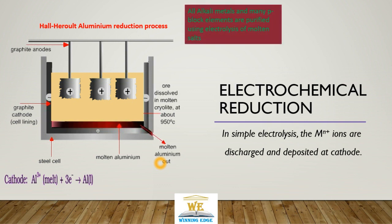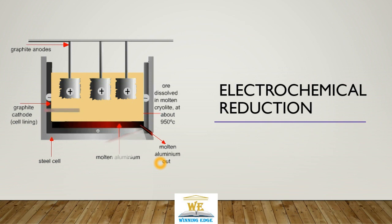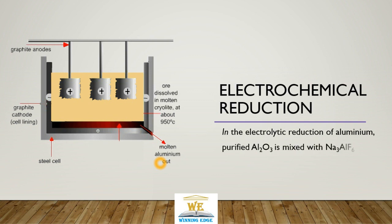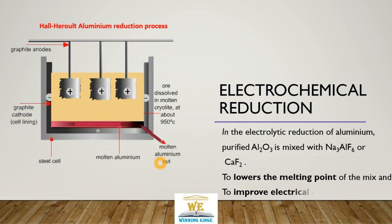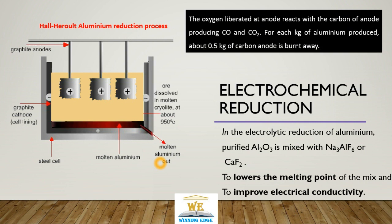All alkali metals and many p-block elements are purified using electrolytic methods. In the electrolytic reduction of aluminum, alumina is mixed with cryolite, Na3AlF6, or calcium fluoride to lower the melting point and to improve the conductivity. Oxygen is liberated at the anode here. For every kg of aluminum produced using the electrolytic method, half kg of carbon block is used. It goes out as carbon monoxide or dioxide.